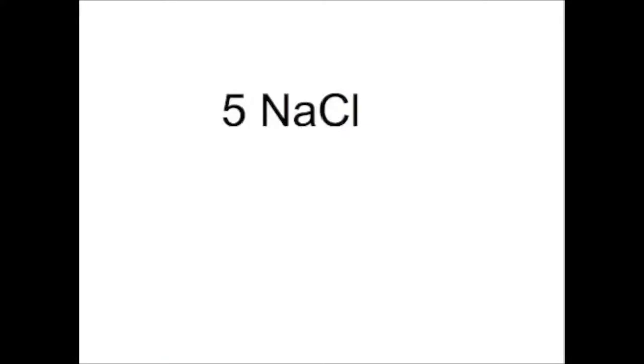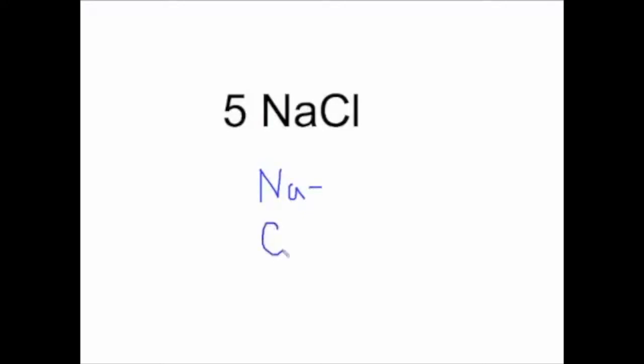Let's go back to sodium chloride. We see the chemical formula NaCl with a coefficient of five in the front. That tells us there are five salt compounds. We have one sodium and one chlorine, but there are five of these compounds, so we have a total of five sodiums and five chlorines.